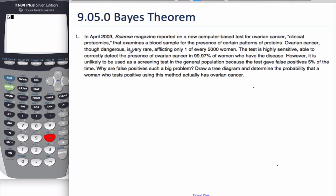So in Science Magazine, we have ovarian cancer scenarios going on. Though dangerous, it's rare. It affects only 1 in 5,000 women. And as I read this question, I am going to put probability notation with all the numbers that I see. So the probability of ovarian cancer is 1 out of 5,000. That's what these numbers tell me.